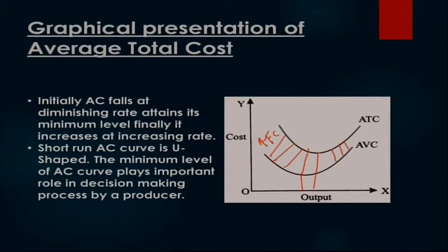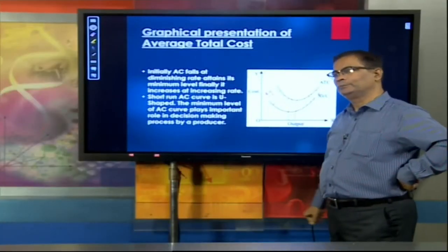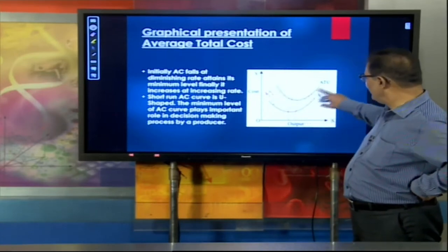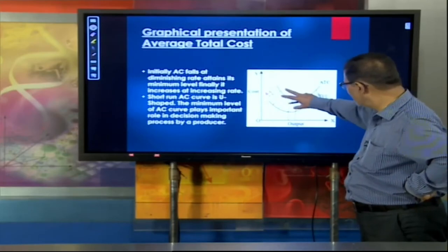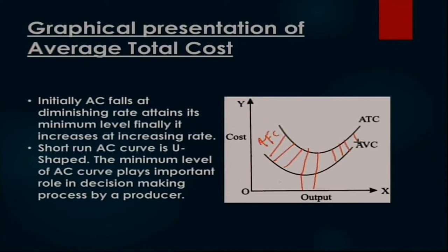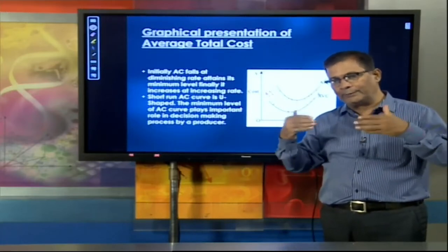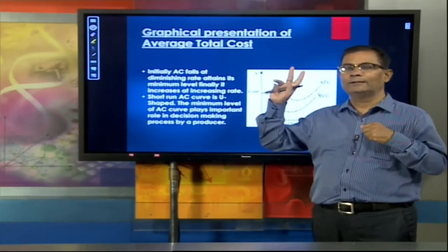The gap between ATC and AVC will be narrower as output increases. Will ATC and AVC ever meet? No — they will maintain a needle-like gap between them because of AFC. Since average fixed cost is never 0, that gap always reflects in the curves. At initial stage the gap will be larger; as units of output increase, the value reduces. Both will attain the minimum level of cost, and after that both curves will rise at a very fast rate.